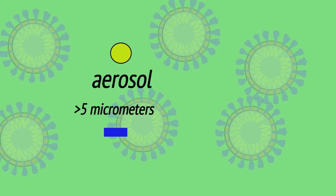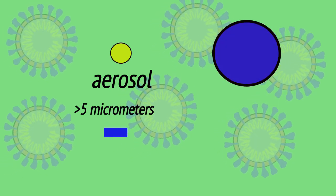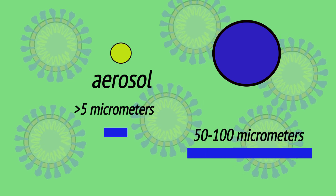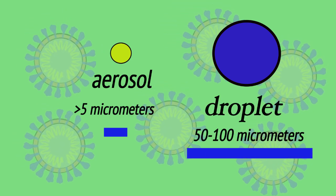And then there's going to be a larger set of particles, probably greater than 50 micrometers in diameter, around 100 micrometers in diameter, potentially. We call these droplets.